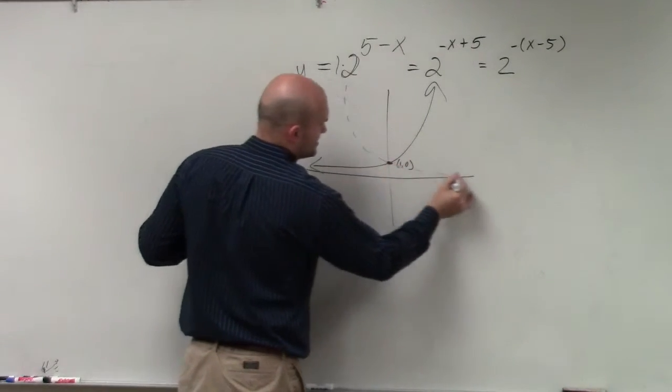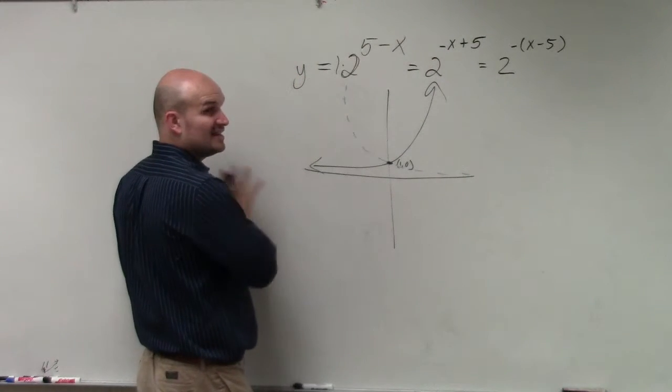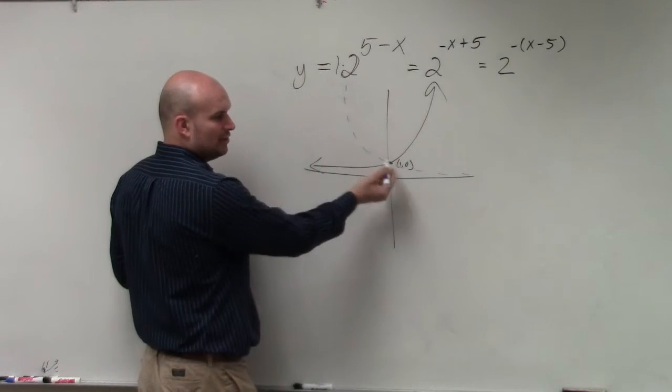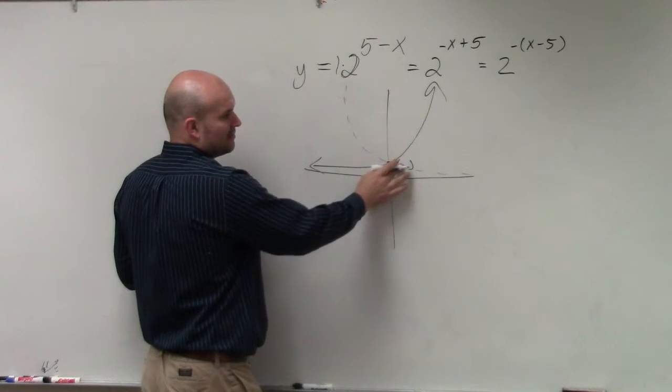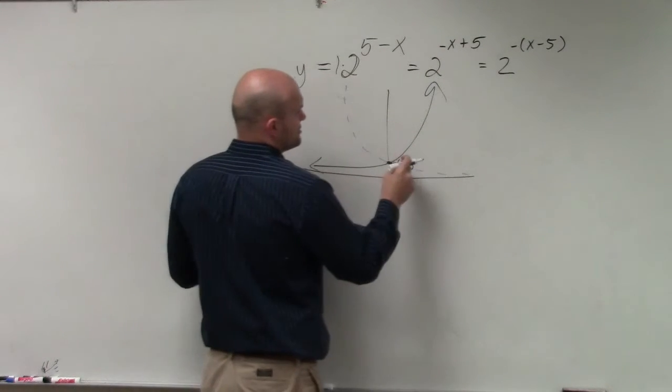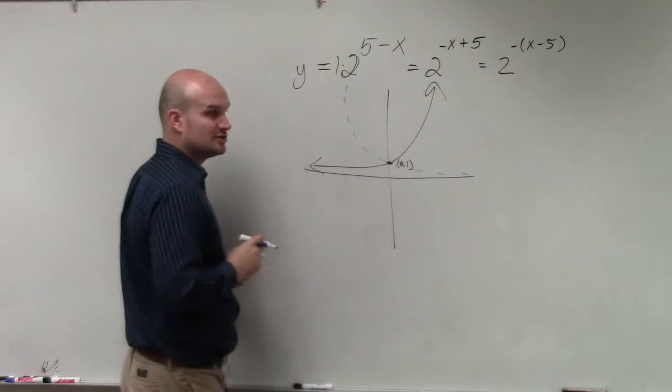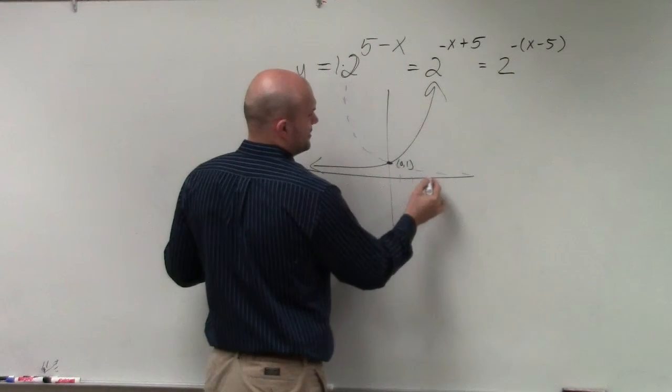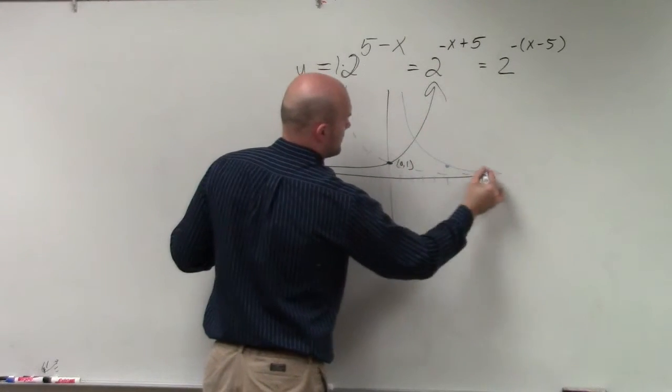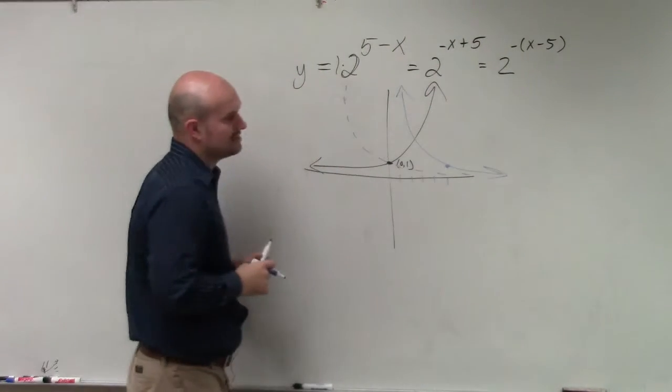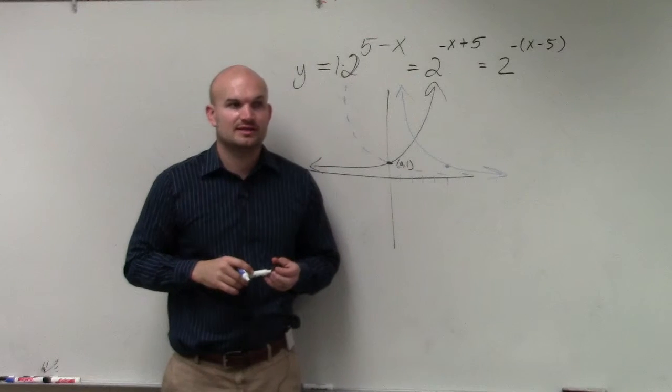So now the graph looks something like this, right? And then it's being shifted 5 units to the right. Well, the only point I know is 0, 1. So if I shift 0, 1 to the right, 1, 2, 3, 4, 5, the graph would look something like that. And that is your final answer.